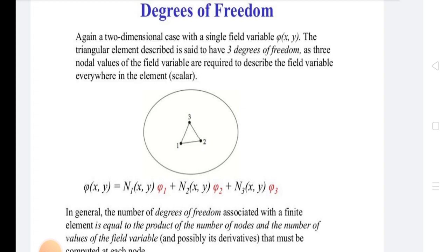So phi(x,y) = N1(x,y)φ1 + N2(x,y)φ2 + N3(x,y)φ3.